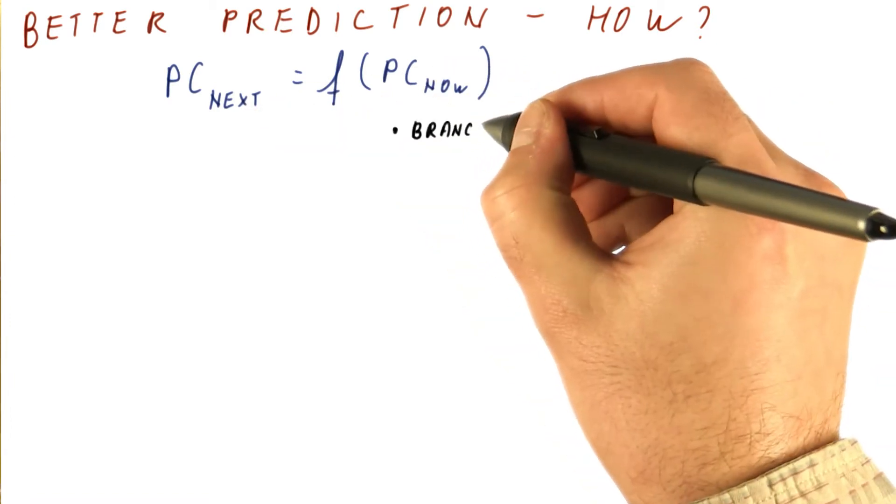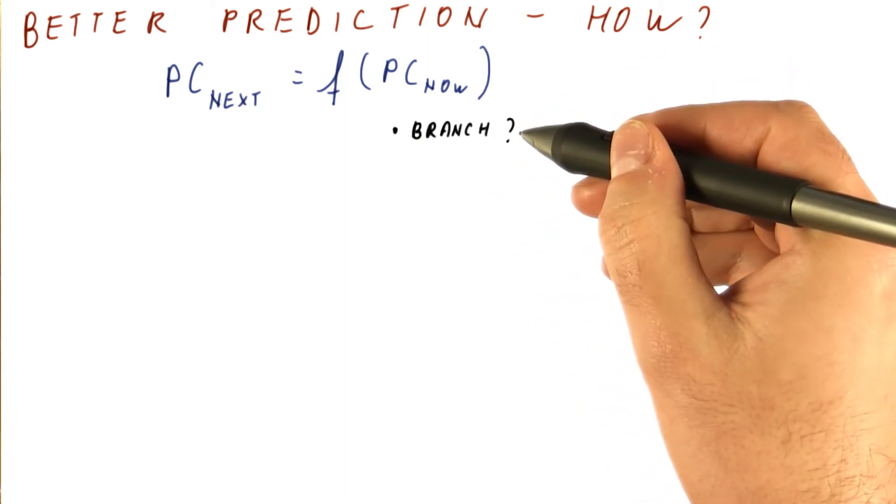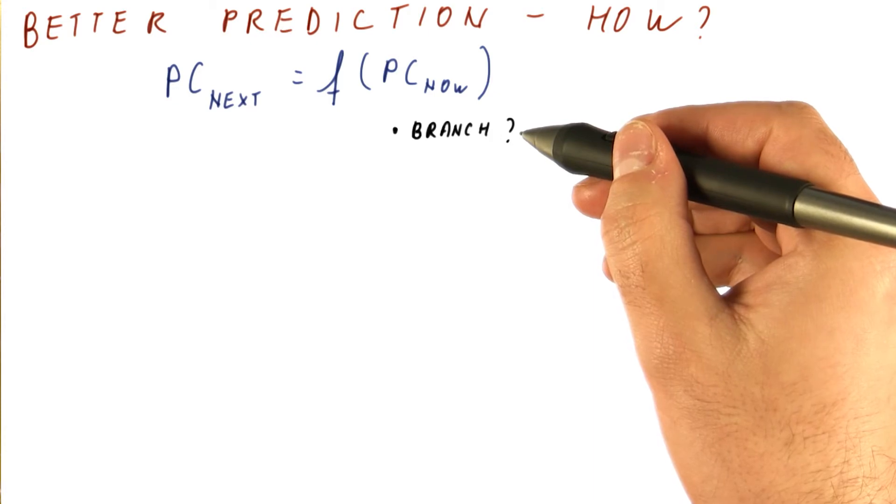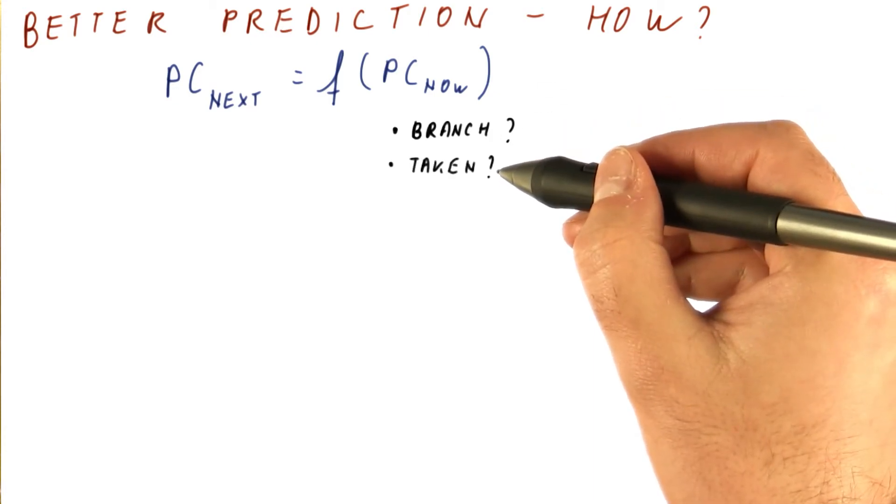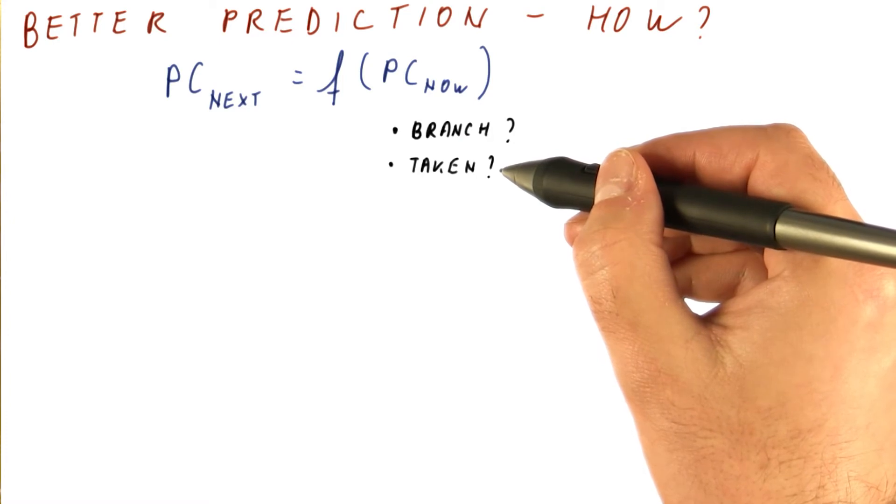It will help us if we knew, is the instruction a branch? But we don't know that - we are still fetching the instruction while we are making the prediction. Is this instruction going to be taken as a branch? Again, we have no clue about that.